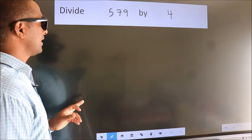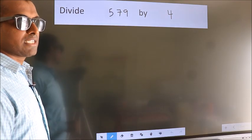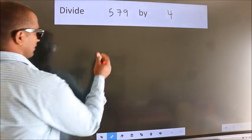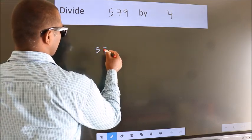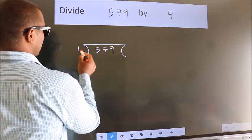Divide 579 by 4. To do this division, we should frame it in this way. 579 here, 4 here.